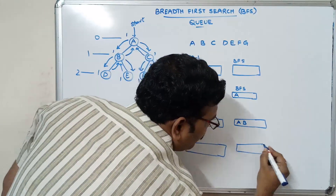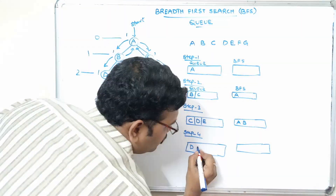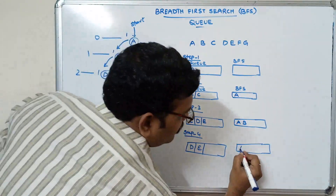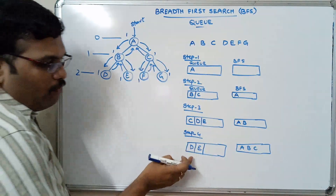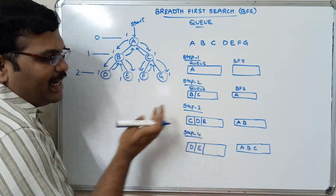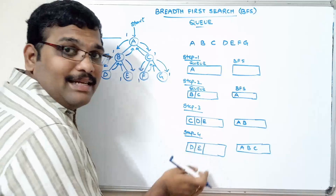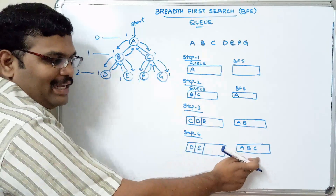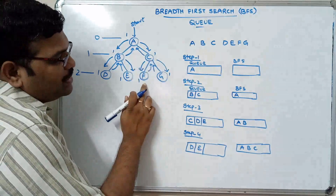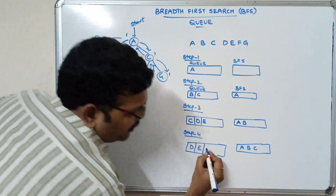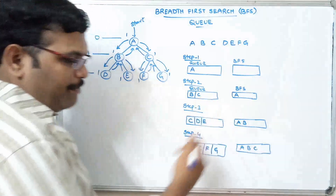Step four: remove the element from the queue. C is removed from the front end — so BFS now shows A, B, C. Insert the adjacent nodes of C into the queue. The adjacent nodes of C are F and G, so insert F and G at the rear end. Apply the same procedure.